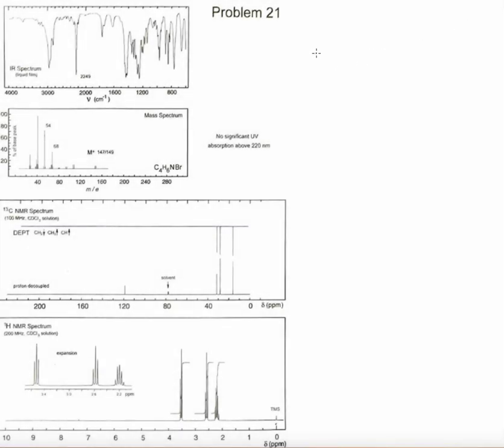This is a problem-solving screencast on structural elucidation in organic chemistry. In this problem we're given four pieces of information: an IR spectrum, a mass spectrum, carbon-13 NMR spectrum, and proton NMR spectrum. We're going to start with the molecular formula which we are given in the mass spectrum data. We have C4H6NBr.